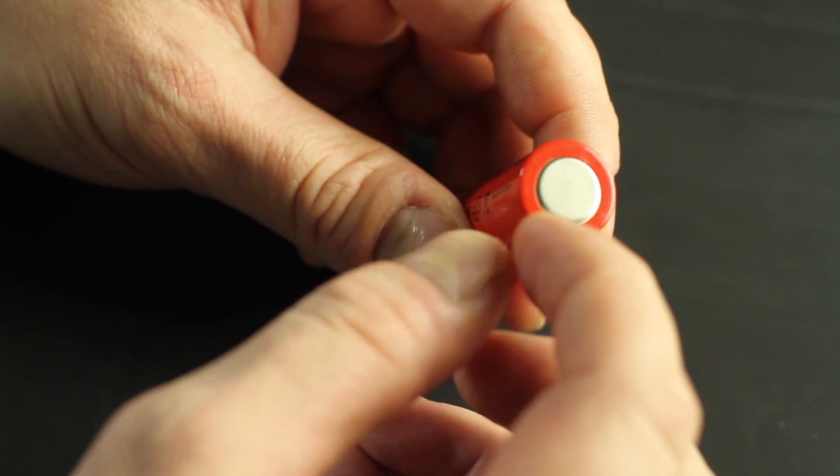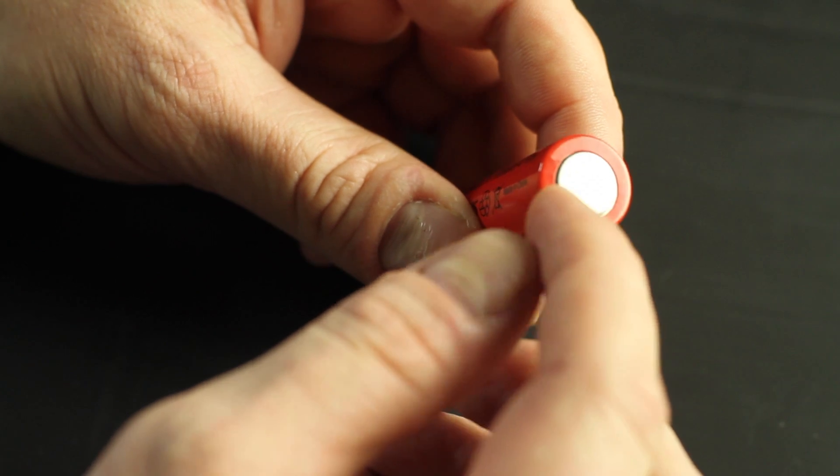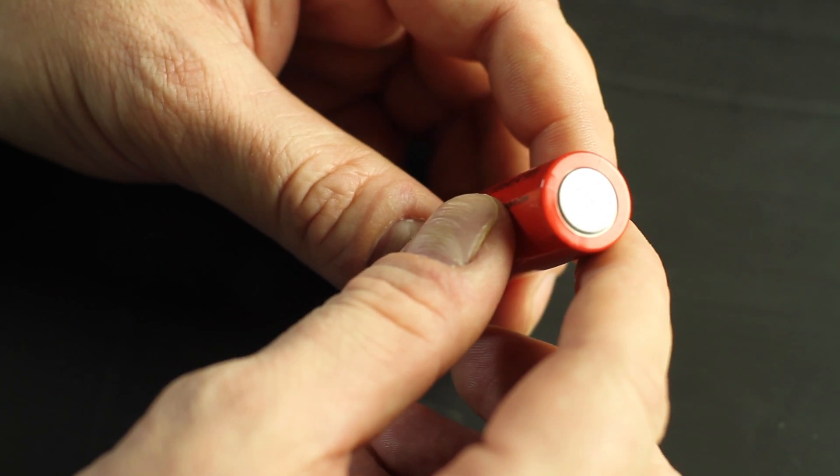Also this red protective sleeve right here, if that's torn and there's any metal exposed underneath that, you don't want to use the battery. It's defective.